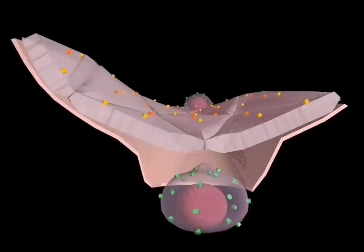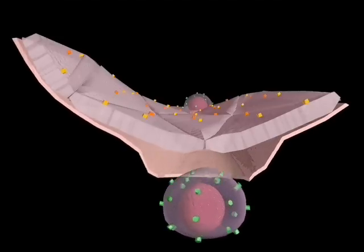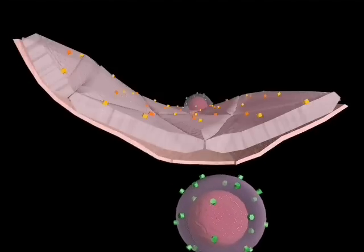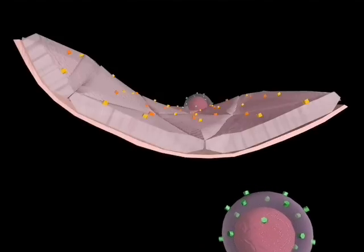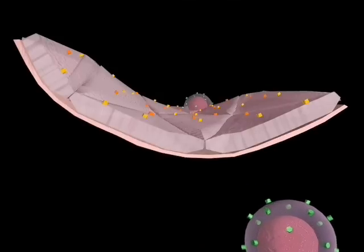This migratory process is called diapedesis. The damaged endothelium then seals over again and reforms. The lymphocyte then migrates toward the site of infection under chemical stimuli in a process known as chemotaxis.